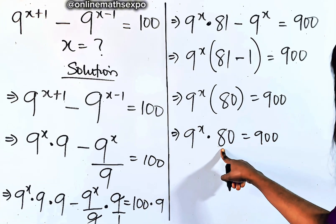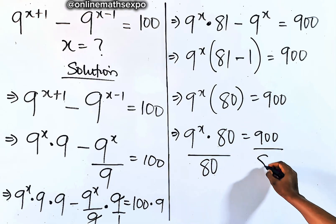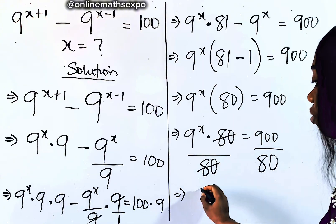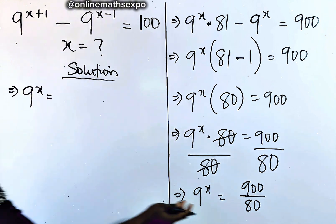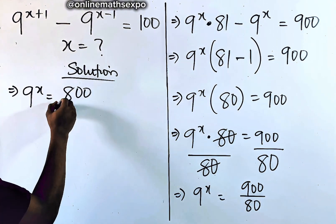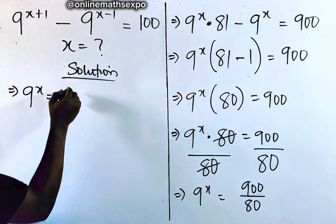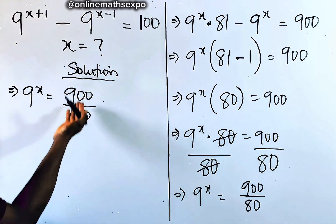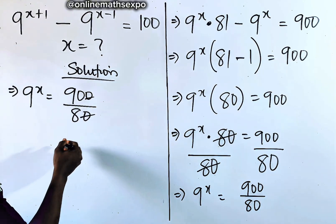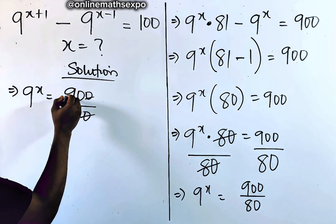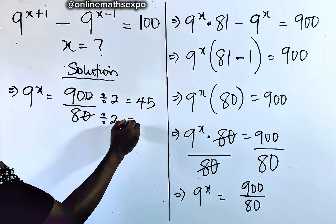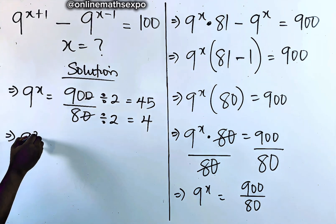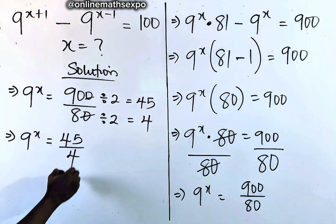To remove multiplication, you divide. So we're going to divide both sides by 80. This will take it off and we are left with 9 to the power of x is equal to 900 divided by 80. Let's simplify — this gives us 90 on 8, and dividing both by 2 gives us 45 over 4. So 9 to the power of x is equal to 45 divided by 4.